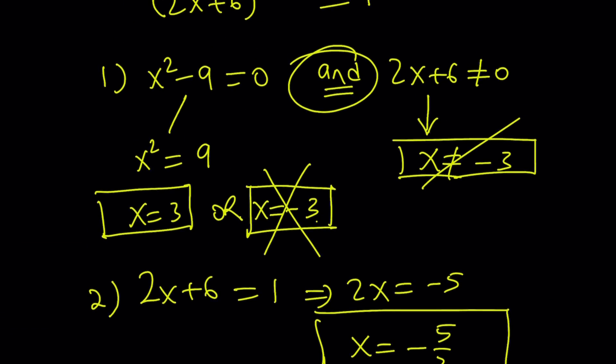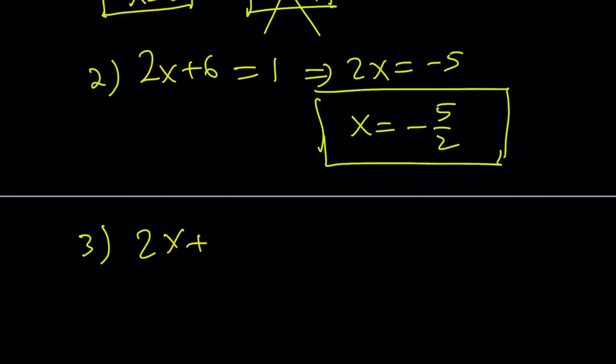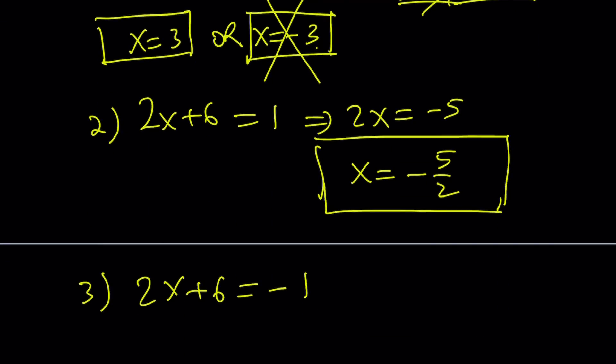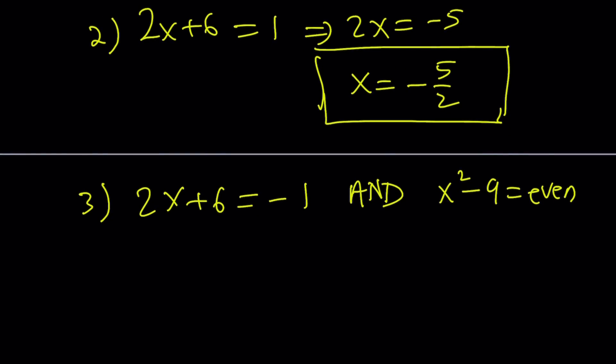The third case scenario is when the base is negative 1. So if 2x plus 6 is equal to negative 1, but also we had to have an even exponent. So we want the exponent to be even. So we want x squared minus 9 to be even. And what is that supposed to mean? It just means that if x squared minus 9 is even, that means x squared is odd, which means x is actually odd here, as long as x is an integer. If x is not an integer and x squared is an integer, we're still good because we don't really care about x.